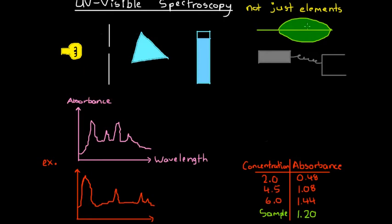The same goes for any item you can think of. The reason we see it as a certain colour is because that is the colour, or the mixture of colours, that is reflected by the object. The rest of the colours are absorbed, and so we see what's left over — the colours that aren't absorbed, in this case by the leaf. Green is not absorbed by the leaf, and that's why we can see its colour.